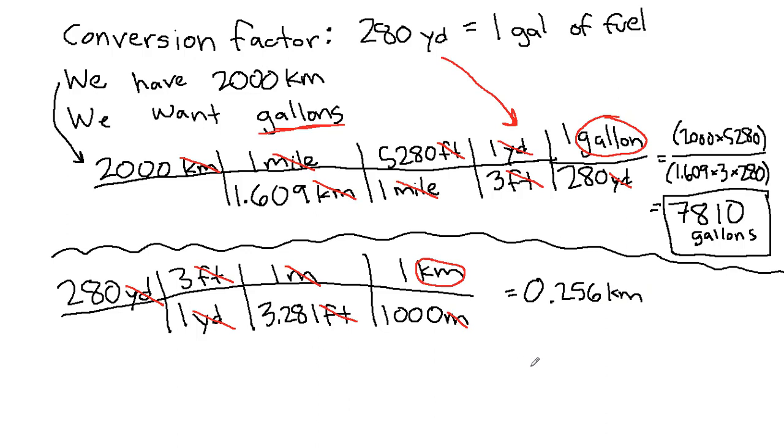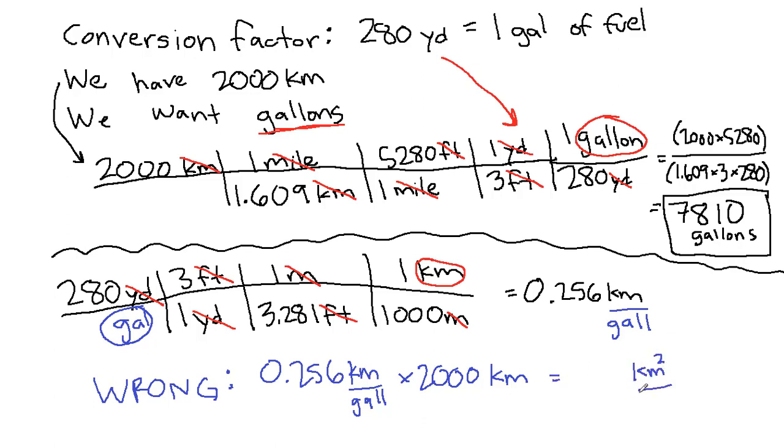Now, here's where students, especially if you're going too quickly, can make a mistake. This was really yards per gallon to start out with, and that's still around, so this is kilometers per gallon. The most common thing I see students do, and I'm just going to write wrong so that we know not to do it, but the most common thing I see students do is they take this 0.256 kilometers per gallon, and they just multiply it by 2000, because that's also in the problem. But I want you to look at these units. What units do we end up with if we just take all that hard work we did and multiply it by 2000? We end up with kilometers squared per gallon. The units are showing us that something went wrong.